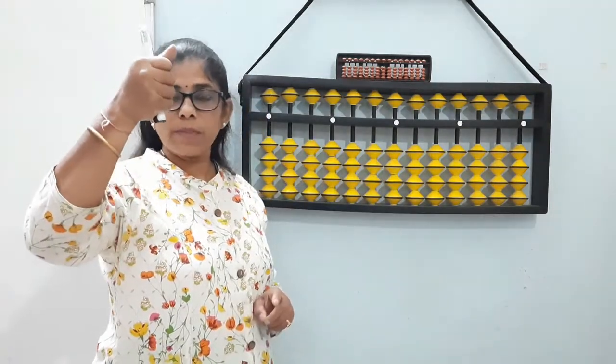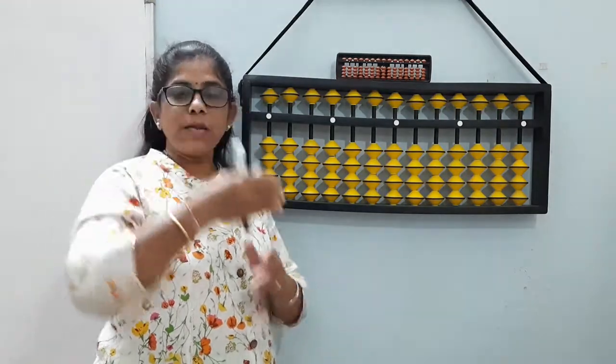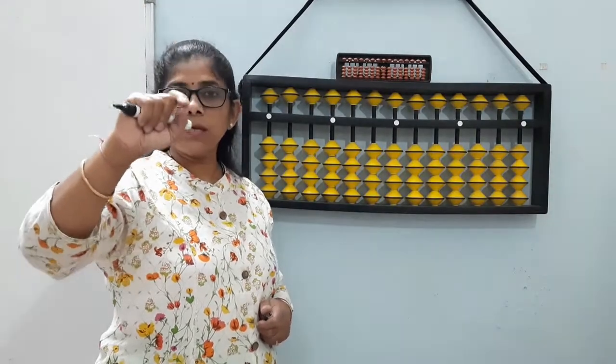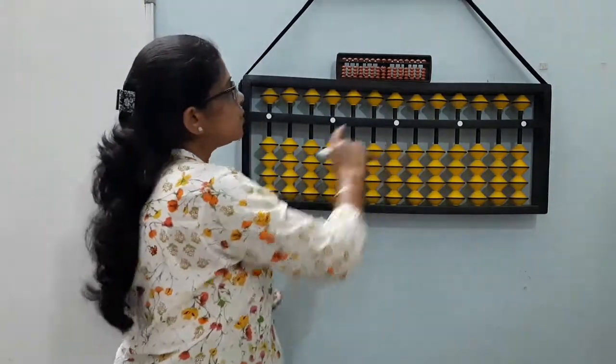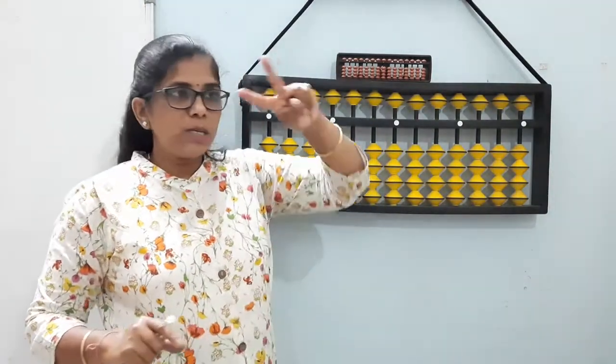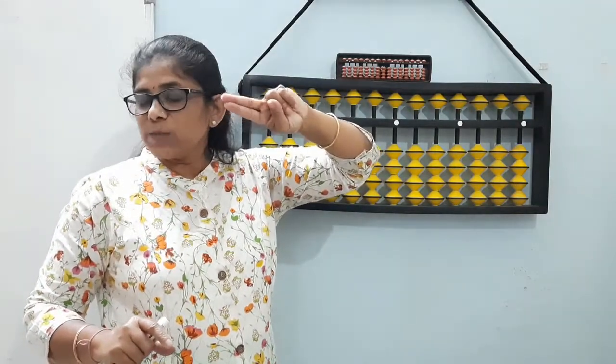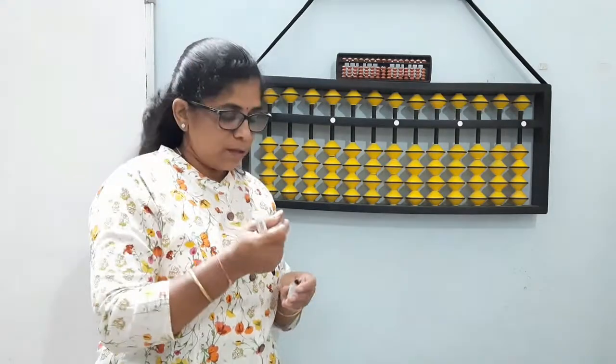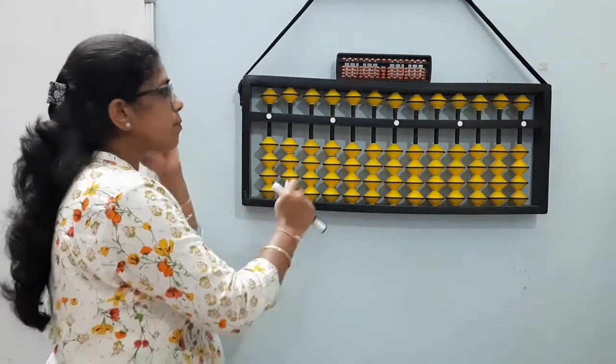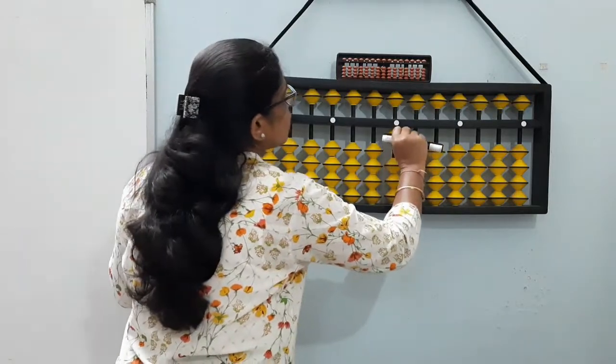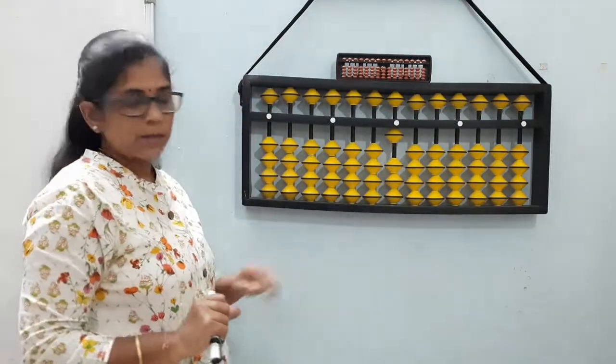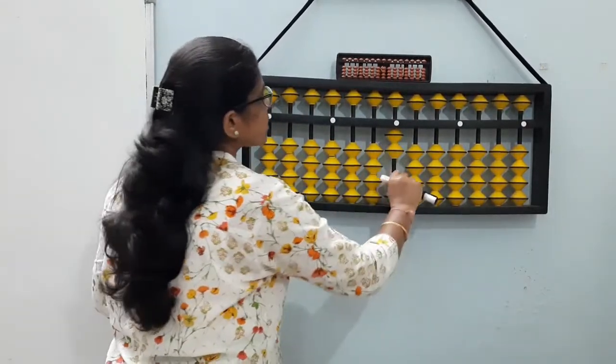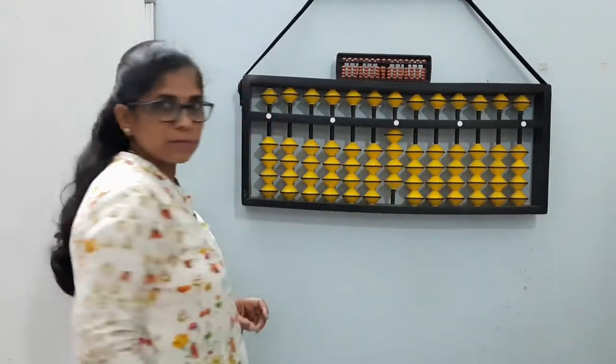Now this is unit space. In abacus, we always hold the pencil like this. And we use only these two fingers to solve it, to move the beads on this unit space. And we use only these two fingers to move the beads on the 10th place. So right now I will show you the sums using only the fingers of my right hand. So here, one bead is now touching this divider. So the value on the abacus is one, two, three, four, five.